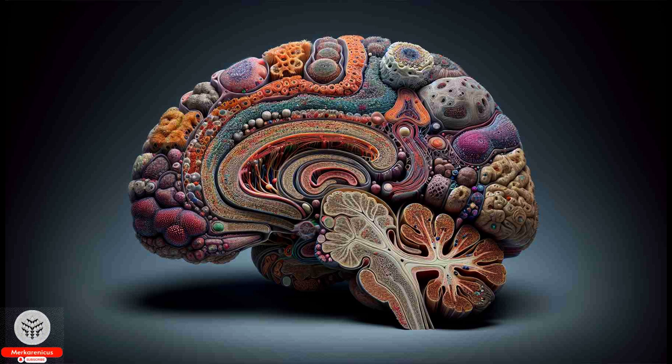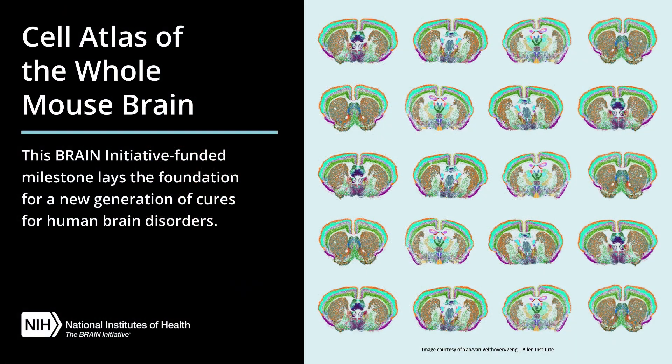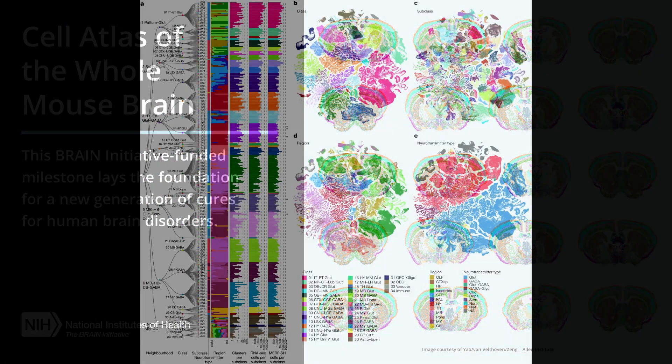A comprehensive map of an entire mammalian brain has been revealed by scientists. This atlas provides detailed information on more than 32 million cells throughout the mouse brain.